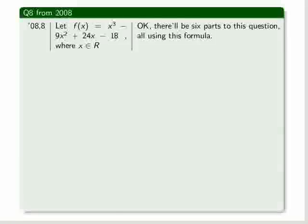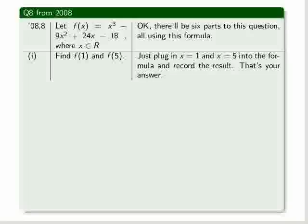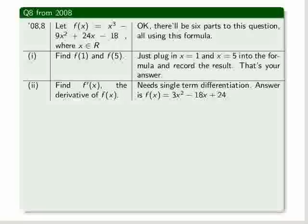Now question 8. You were given a cubic function, which you've already seen the shape of. And there are six parts to it. The first part, you just have to let x equal 1, and let x also equal 5, and see what the values you get from it. Then you have to differentiate it.